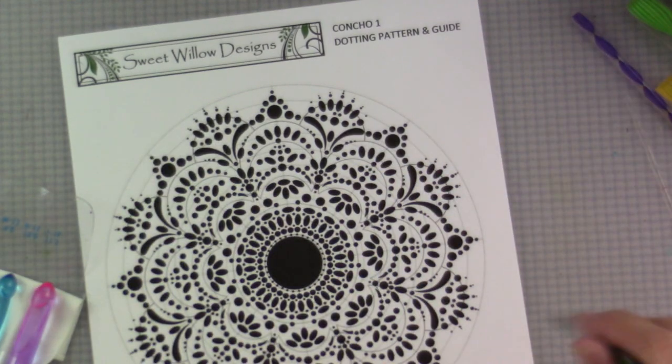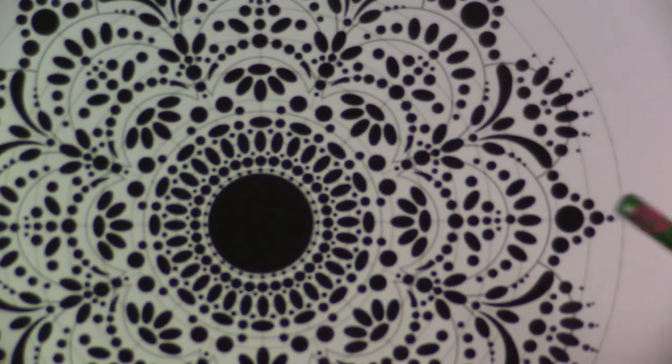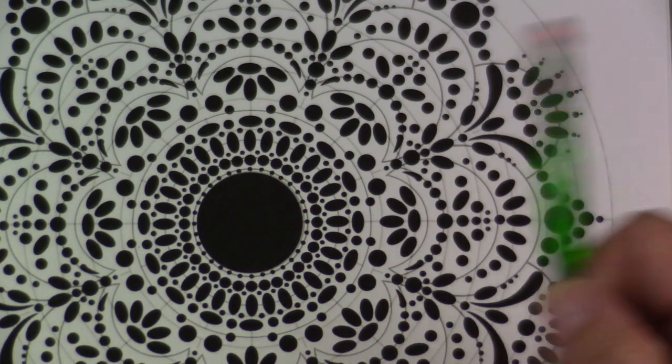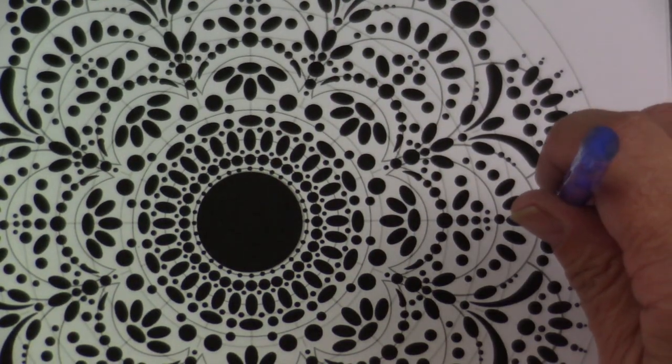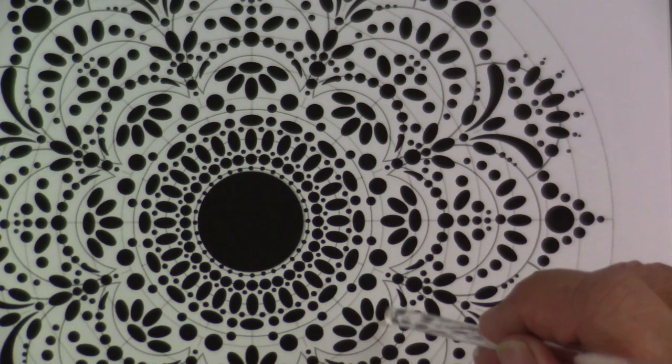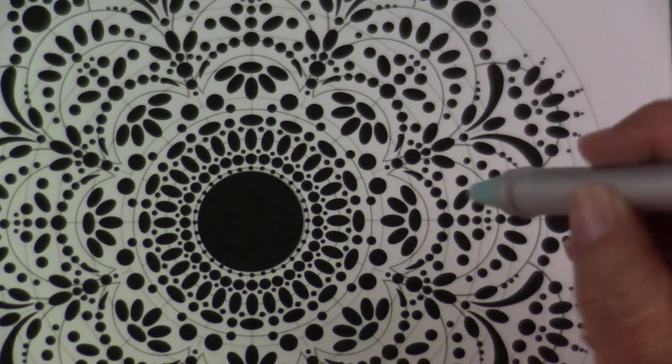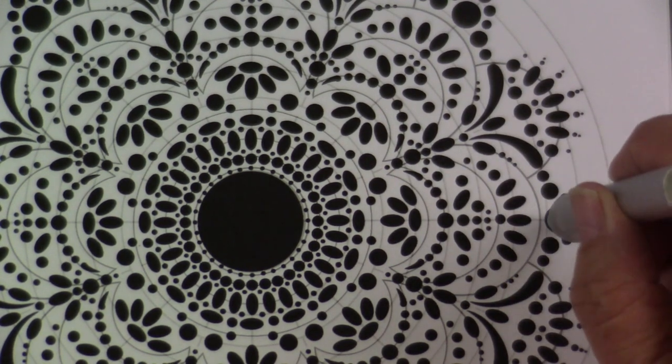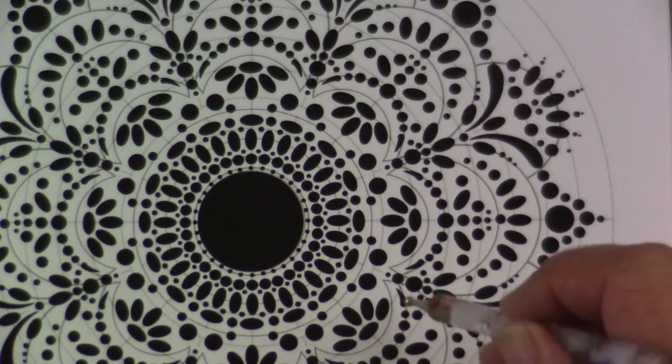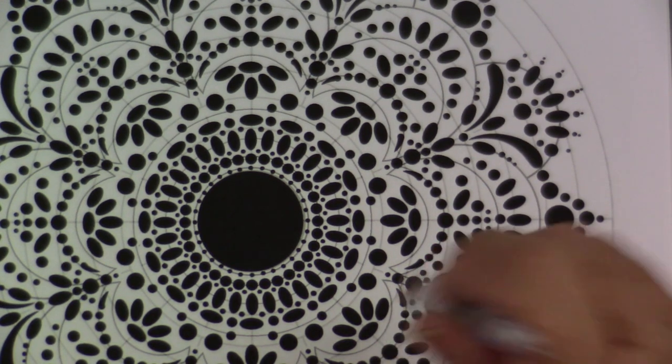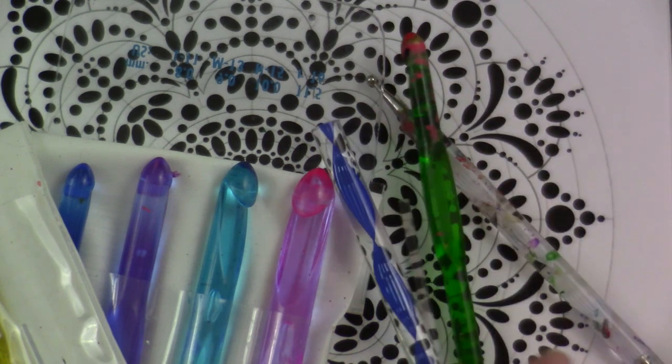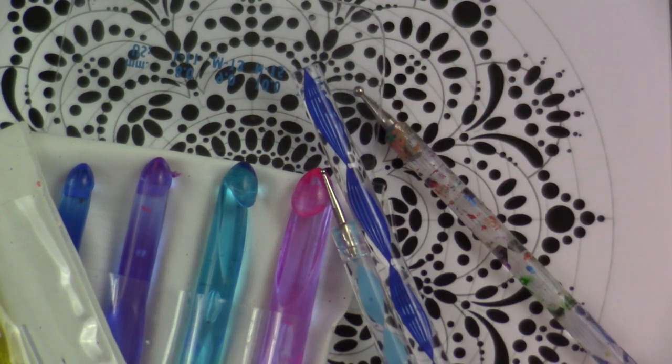There are a couple of pages where you can do several things. Number one, you can measure your tools. So I use a certain set of tools, but we don't all have the same dotting tools. In the pattern, I give you the millimeter and I give you the reference to the tool set that I use, but I've also included this actual size document. You can take whatever dotting tools you have and measure them against this illustration and choose the size of tool that works best for you. And that's really handy.